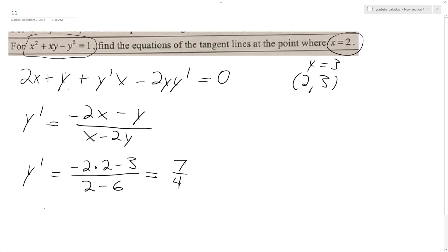All right, so y minus 3 equals 7 over 4, x minus 2. So y minus 3 equals 7 over 4 x minus 7 over 2.